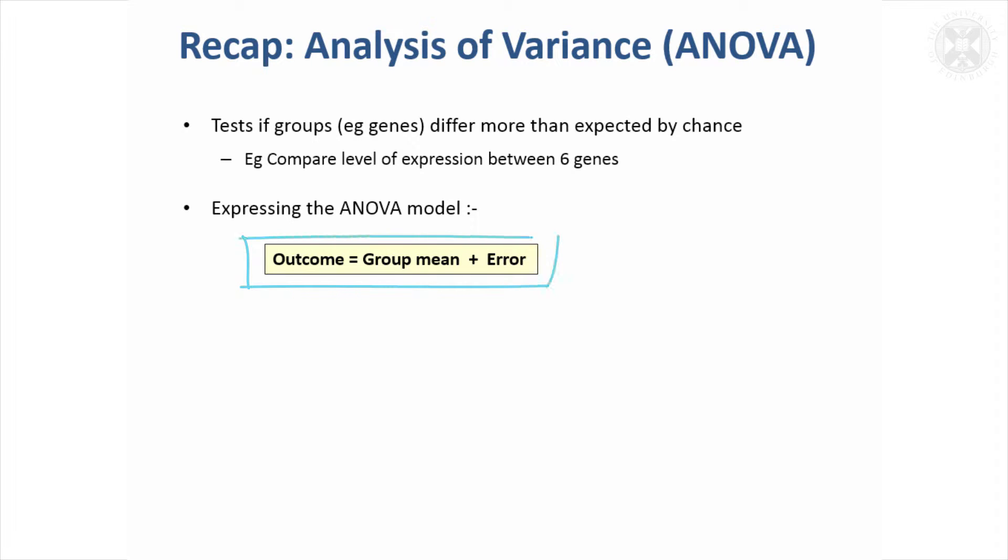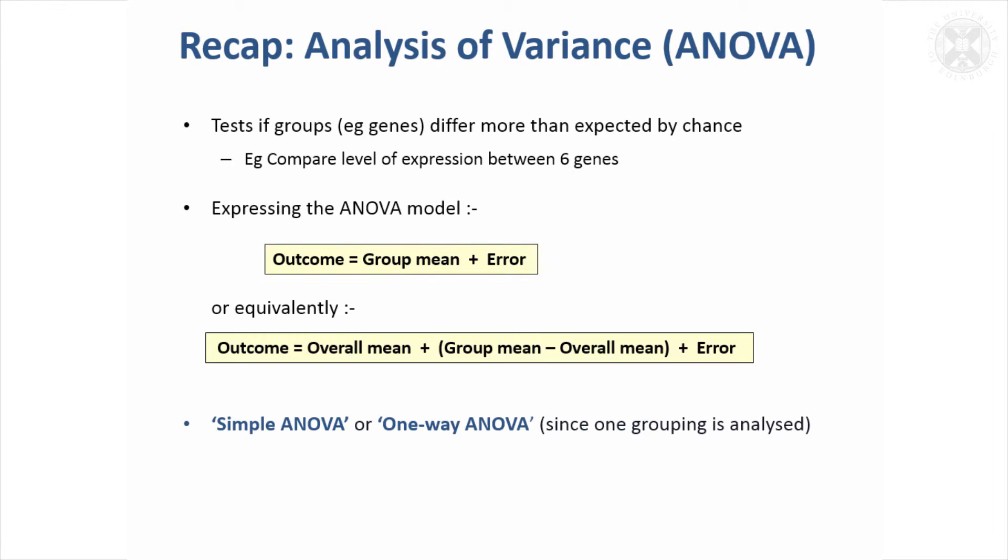We can express the model as an outcome, the thing that we're trying to analyze is equal to a group mean and then an error term. We're trying to find out if these group means differ significantly from each other.